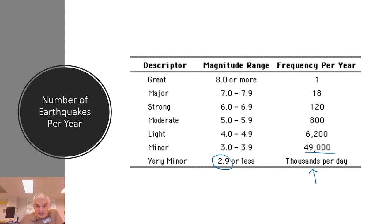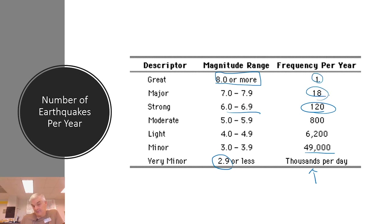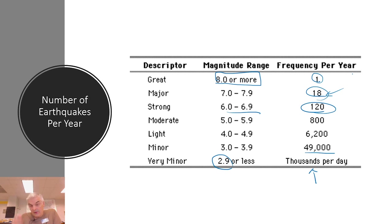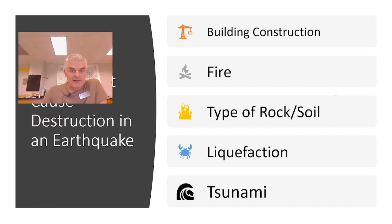Strong earthquakes at 3.9 to 6.9 — there are about 120 a year across the earth. A great earthquake, which is eight or more, happens about one a year, though you could have more. Major ones at around seven, you get about 18 a year. Just as I'm making this, there was an earthquake in Puerto Rico maybe a week ago.